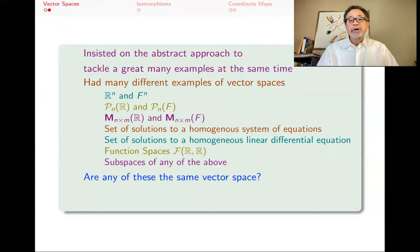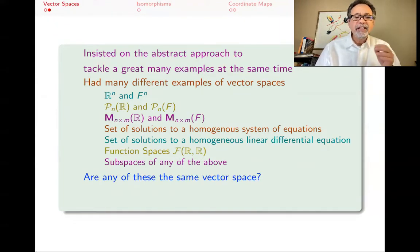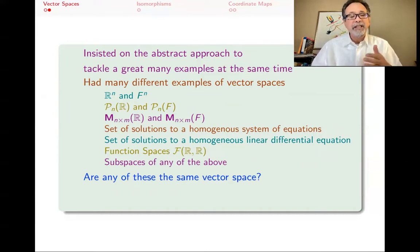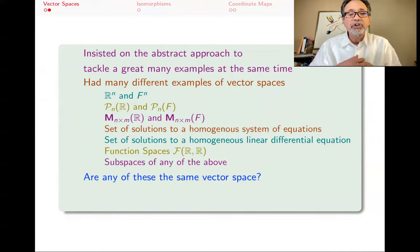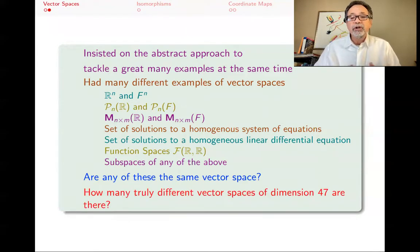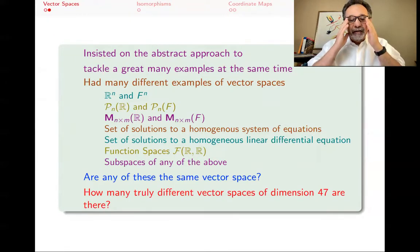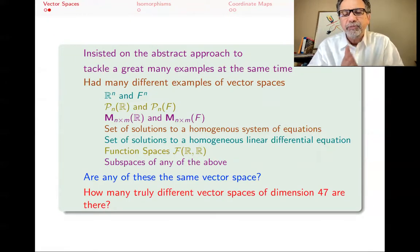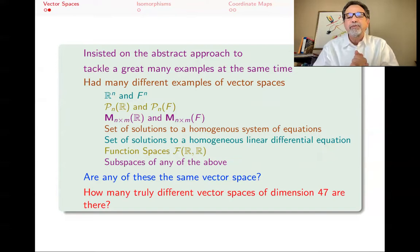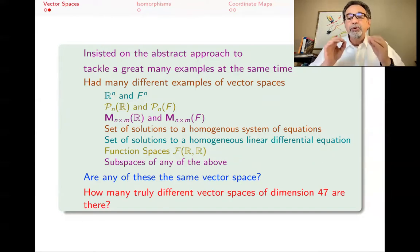The question animating this lecture is: are any of these vector spaces actually the same vector space? They don't look different, but as far as linear algebra is concerned, are they the same or not? In particular, to focus our attention — how many truly different vector spaces of dimension 47 can you find? That's what we want to answer.